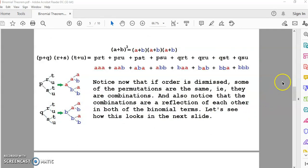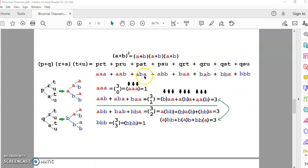Now, notice that if order is dismissed, in other words, if we have these eight terms here, and if we dismiss the order of these terms, then some of the permutations in here are the same. In other words, they are combinations. And also notice that the combinations are a reflection of each other in both of the binomial terms. Let's see how this looks in the next slide.